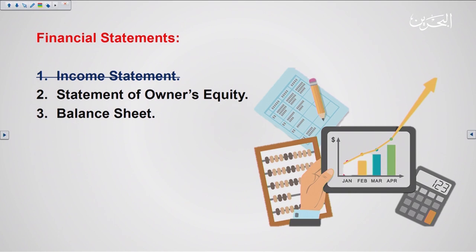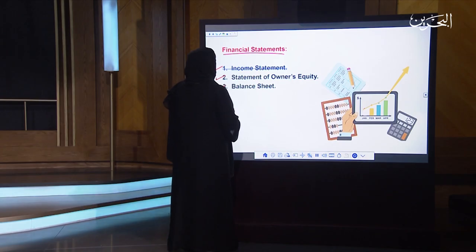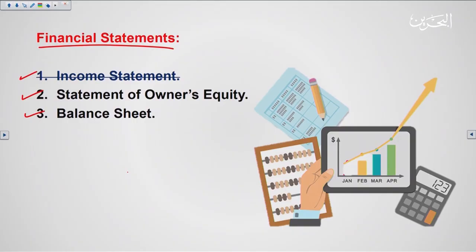If you remember, we have talked about the three important financial statements which are the income statement, the statement of owner's equity, and the balance sheet. These three statements are all linked together and we have to prepare them one by one. In the last lesson we finished the income statement, and today we are going to start on the statement of owner's equity.